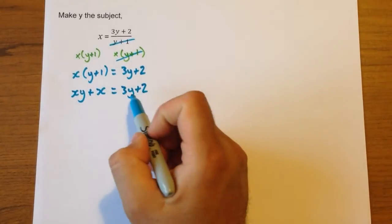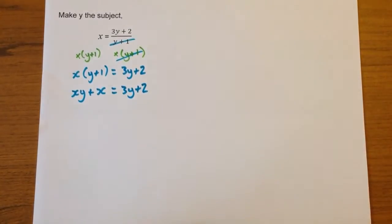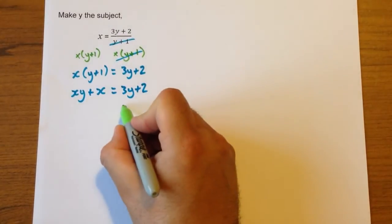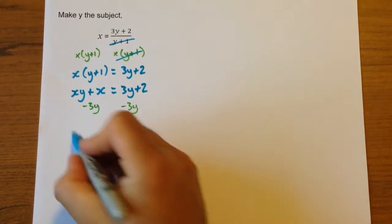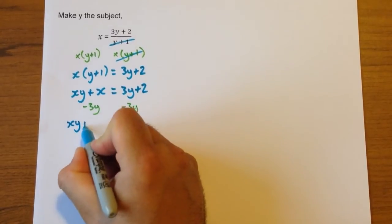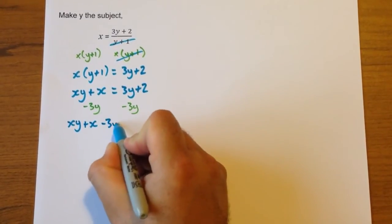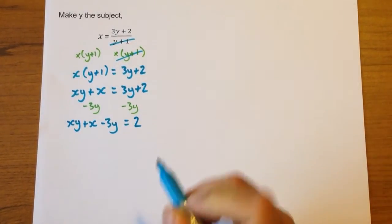Now we're trying to make y the subject, so we need to get all the y's together on the same side. We're going to do that by subtracting 3y from both sides, and that will give us xy + x - 3y = 2.